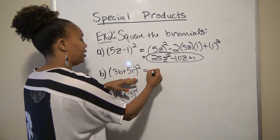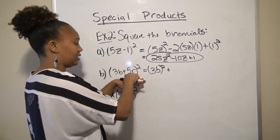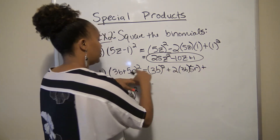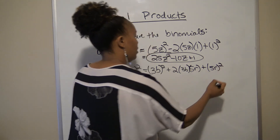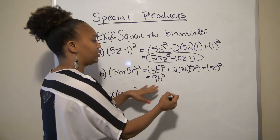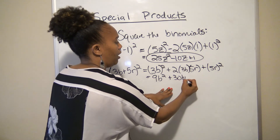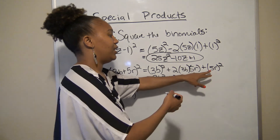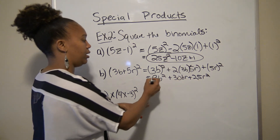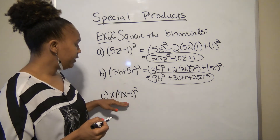For part b, we're squaring (3b + 5r). The first term squared is (3b)² = 9b². Then plus 2 times the first term times the second term: 2 × 3 × 5 = 30, so +30br. Then the last term squared: (5r)² = 25r². So (3b + 5r)² = 9b² + 30br + 25r².